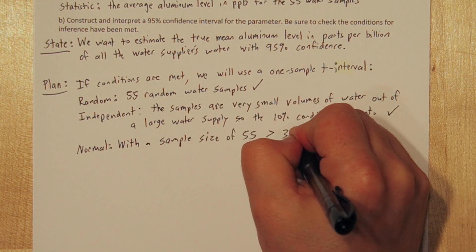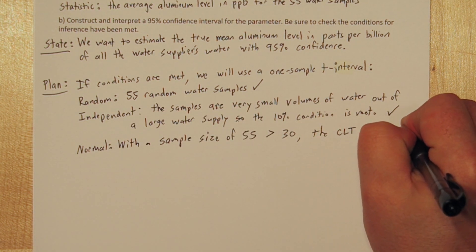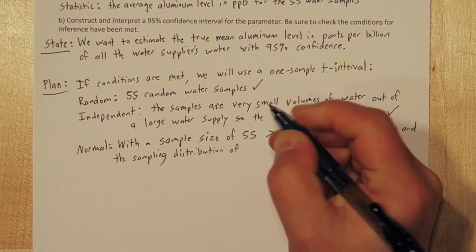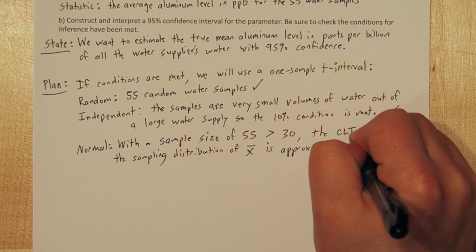Normal: With a sample size of 55, it's greater than 30, so the central limit theorem applies, and the sampling distribution of x-bar is going to be approximately normal.